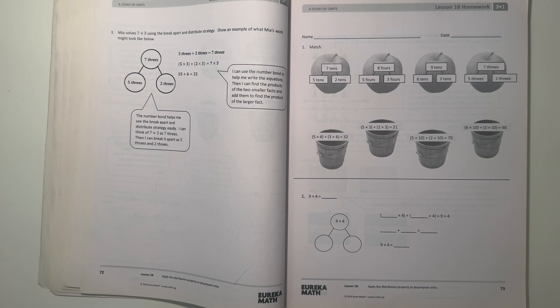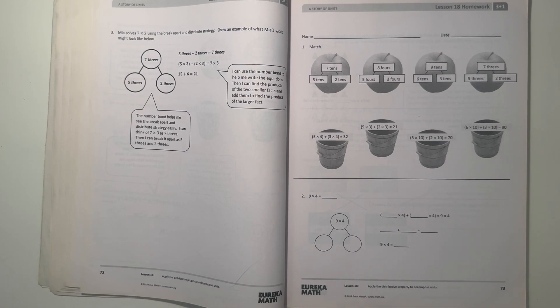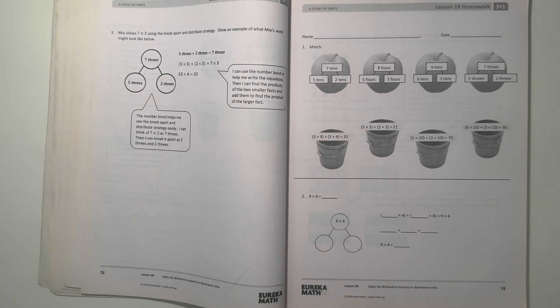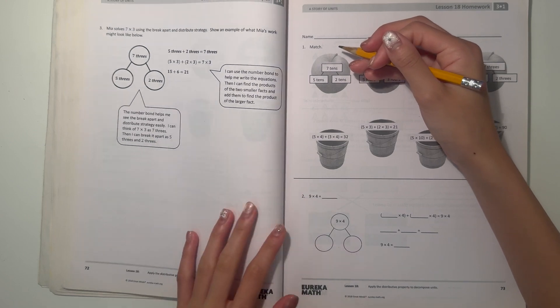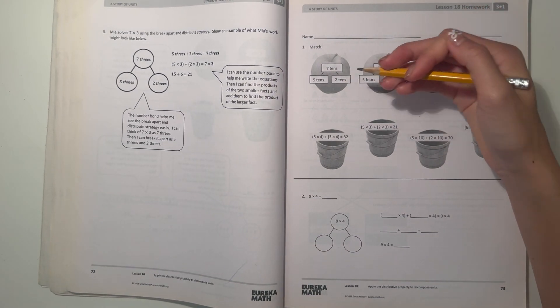Hey guys, today I'm doing the Eureka Math Grade 3 Module 1 Lesson 18 homework. So let's get started. Number one, match. All right, so we have some number bonds. Here it's